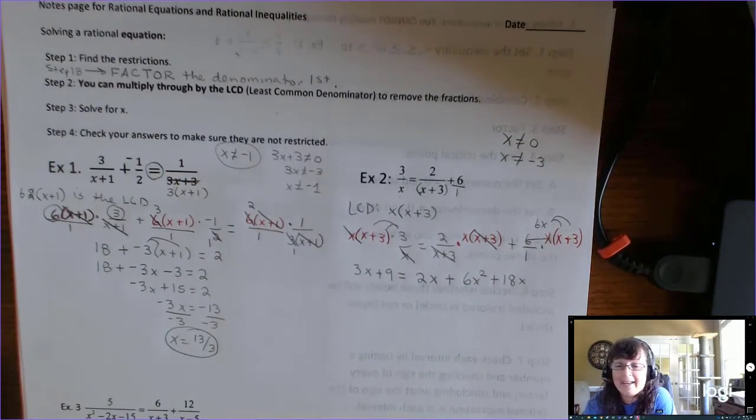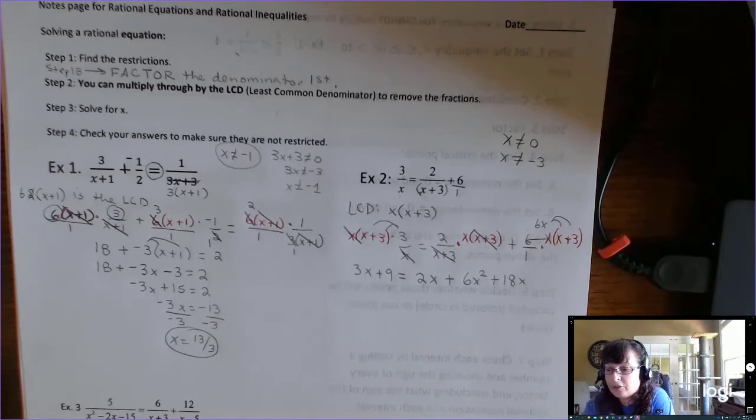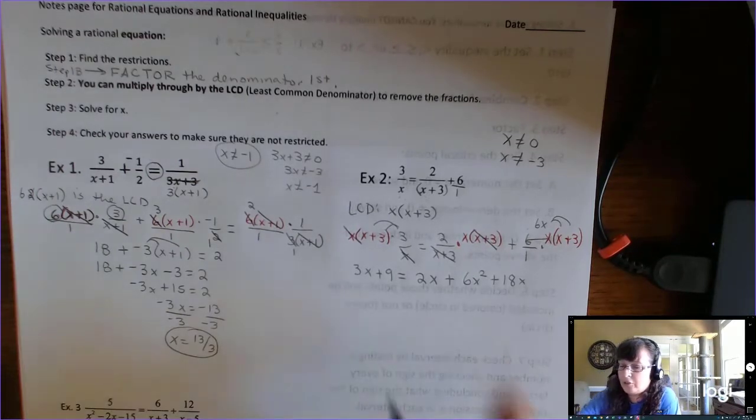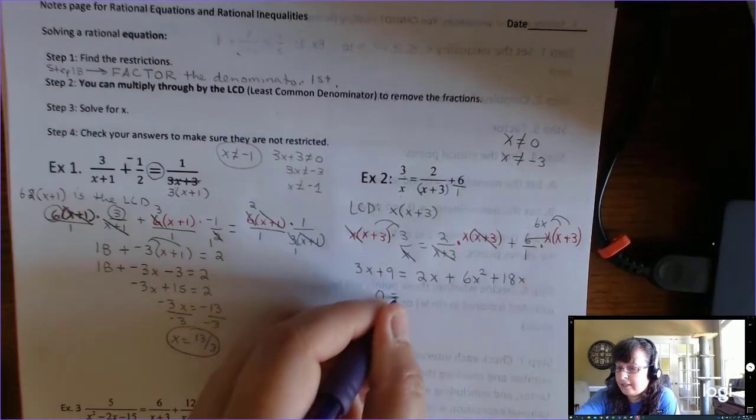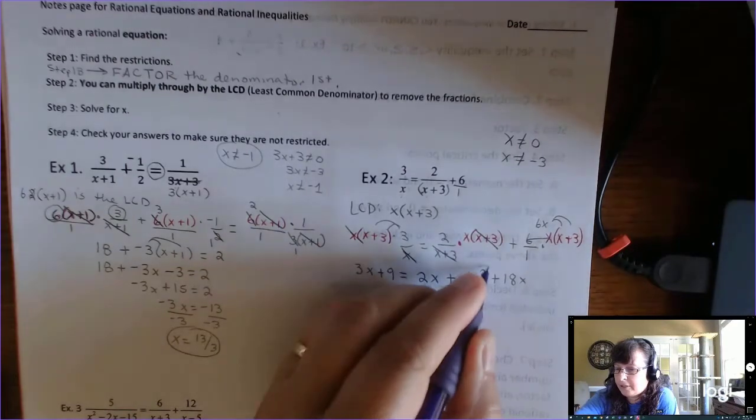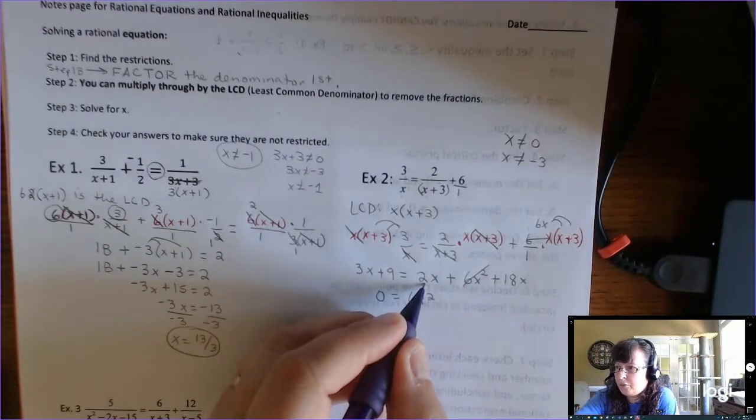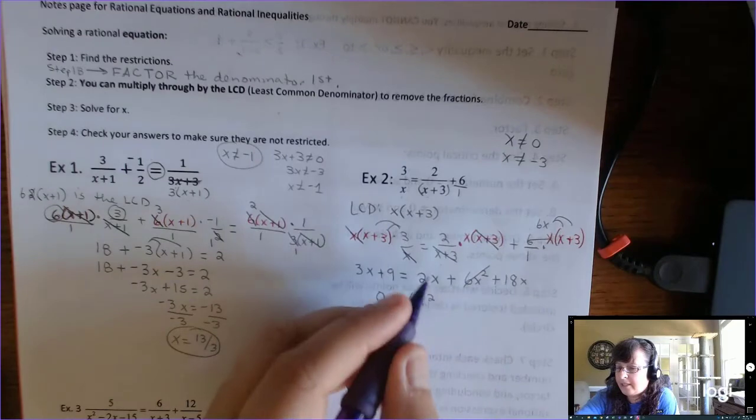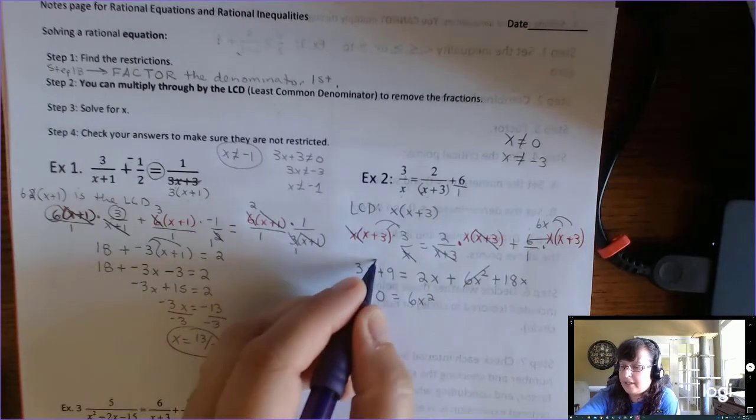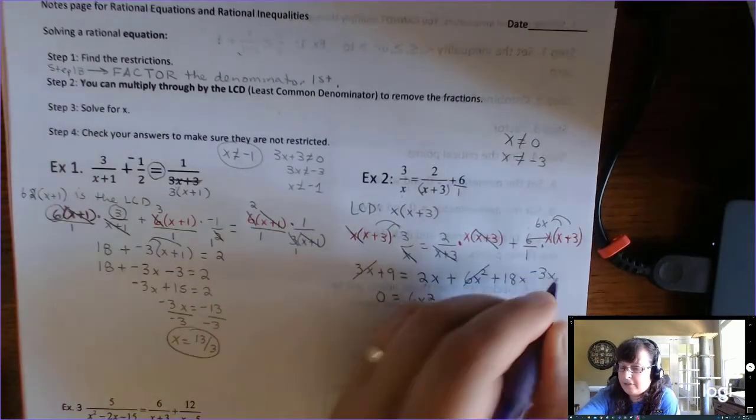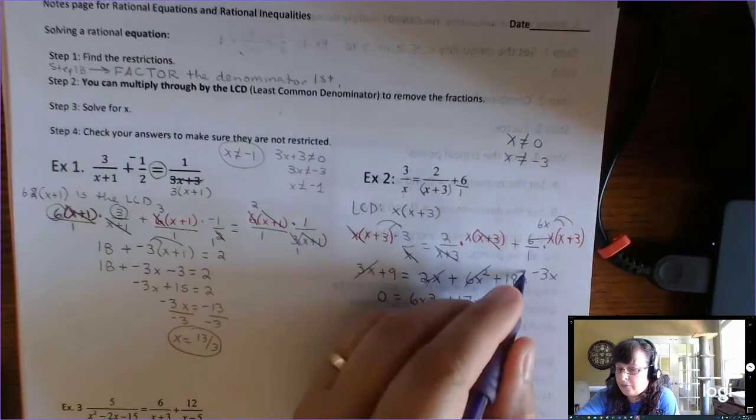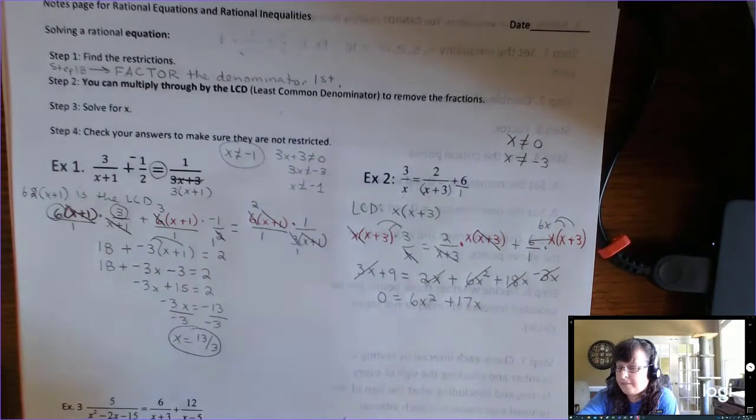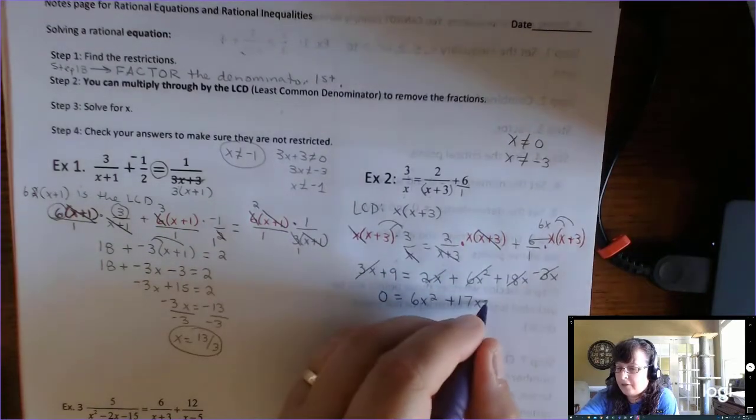But what do we have? We have a quadratic. So do you know how to solve a quadratic? Right. You want to set it equal to zero. And you want your x squared term to be positive. So I'm going to move everything over to the right. And put it in descending order. So that's 6x squared. And then 2x plus 18x are on the same side. So that's 20x minus 3x gives me 17x. So that's 20 minus 3, 17. And then this 9 has got to go over here. That's minus 9.